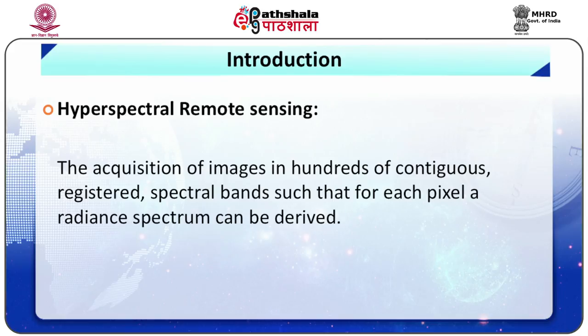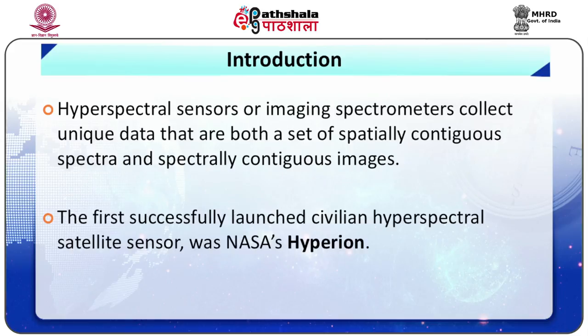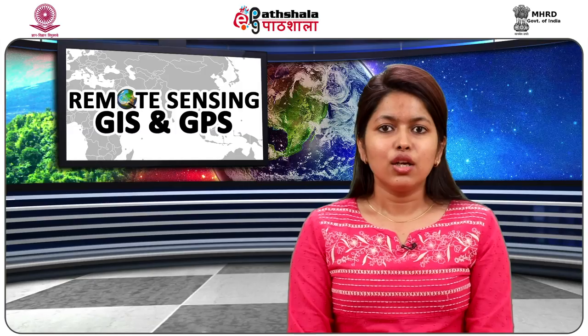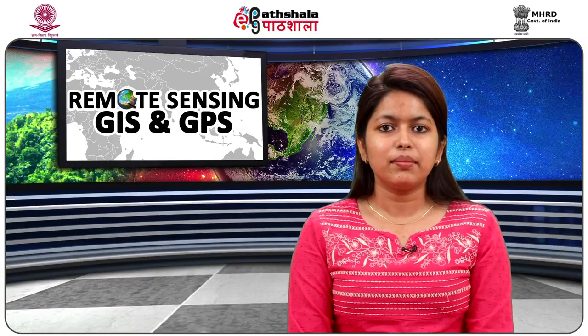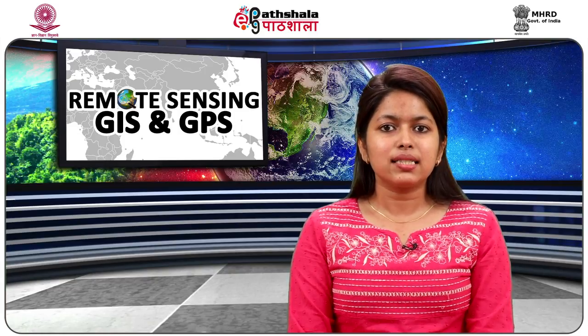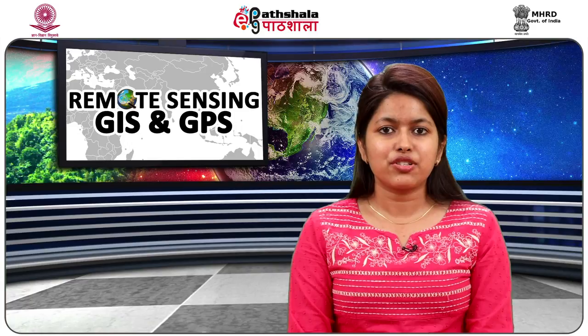Such that for each pixel a radiant spectrum can be derived. Hyperspectral sensors or imaging spectrometers collect unique data that are both a set of spatially contiguous spectra and spectrally contiguous images, as shown in figure 1. One of the earliest applications of hyperspectral remote sensing identified was geological mapping and its commercial role in mineral exploration.